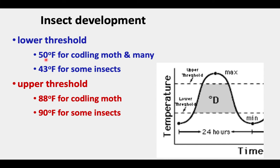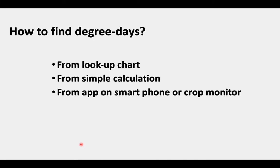This lower threshold is known for codling moth — it is 50 degrees Fahrenheit, and it's also 50 for many other insects. It is a lower temperature, 43 degrees, for some insects like oriental fruit moth. The upper threshold is known as being 88 degrees for codling moth; it is 90 degrees for some other insects.